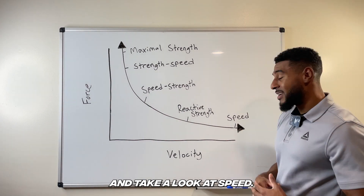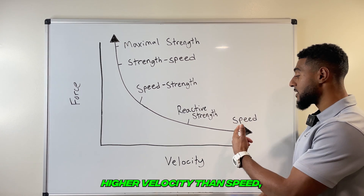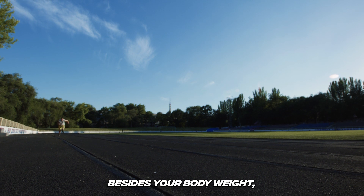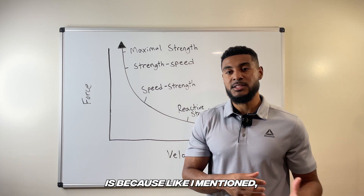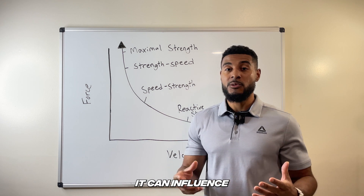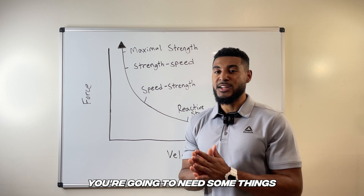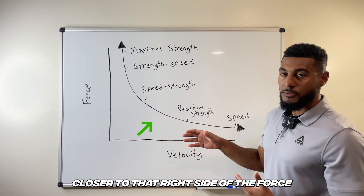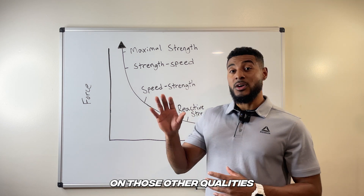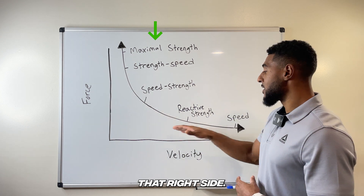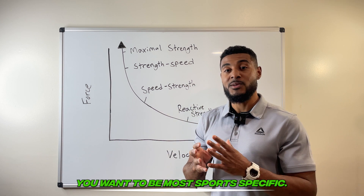Now let's look at speed. Speed is sprinting — it is the fastest thing that we can do. There's nothing higher velocity than speed, which is why it's all the way at the right side of the curve. There's no resistance besides your body weight, which is why you're able to move it with such a high velocity. That's the curve in a nutshell. Depending on your specific goal, it influences what you need to work on. For a track athlete doing the hundred meter dash or the long jump, you'll need things closer to the right side of the curve. But in the off season, you do want to work on those other qualities and adaptations — focus on maximal strength work.